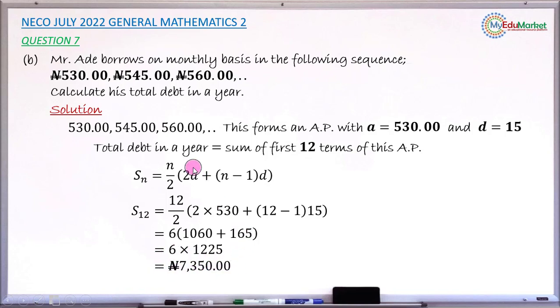So this will now be his total debt if he continues borrowing in this pattern up to the end of the year. And this answered the question. Let me just write it in statement form - his total debt in a year will now be 7,350 Naira.